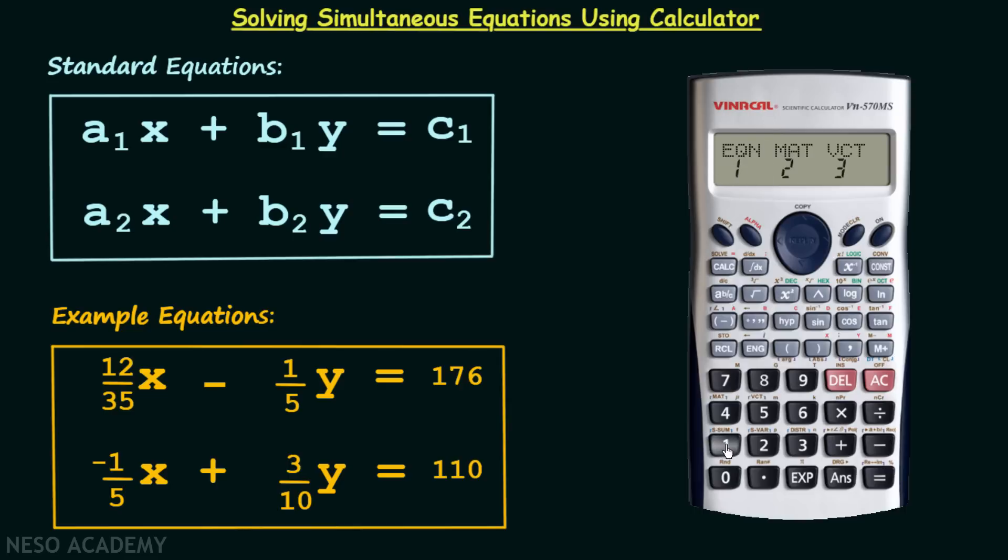So let's press 1 and now it is asking us how many unknowns are there in our equations. In our equations we have two unknowns therefore we will press 2.